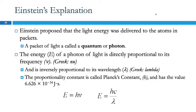So what this tells us, and what Einstein proposed, is that the light energy is being delivered to atoms, to those electrons, in packets, or little packages. A packet of light is called a quantum or a photon. So a photon is a piece of light. That piece of light hits the electron, and it either has enough energy to dislodge the electron, or it doesn't. If it has enough energy, then the electron will be ejected. If it doesn't, the electron will not be ejected.